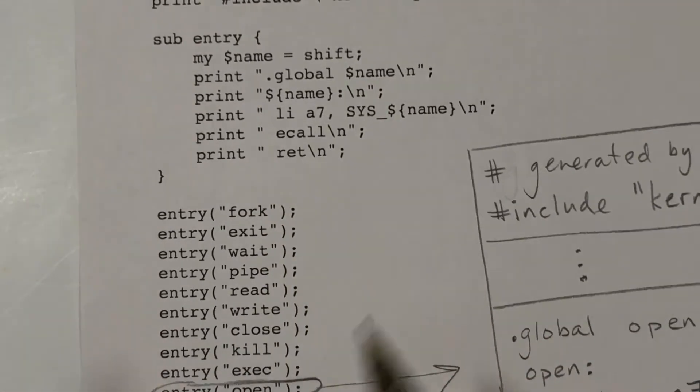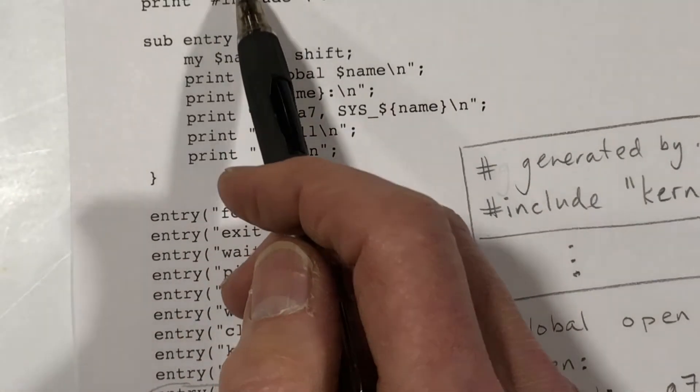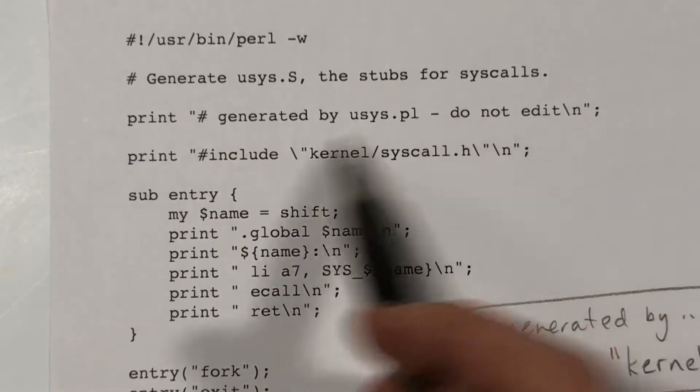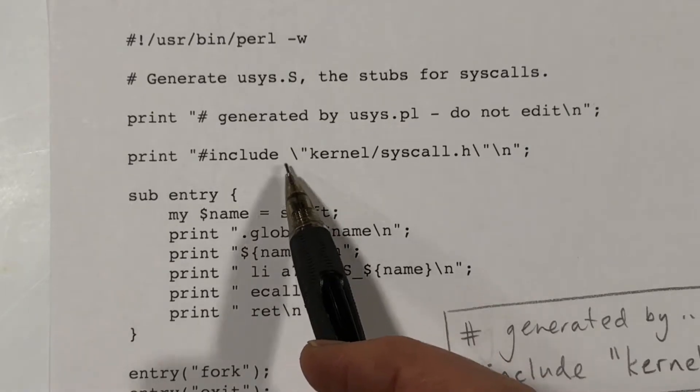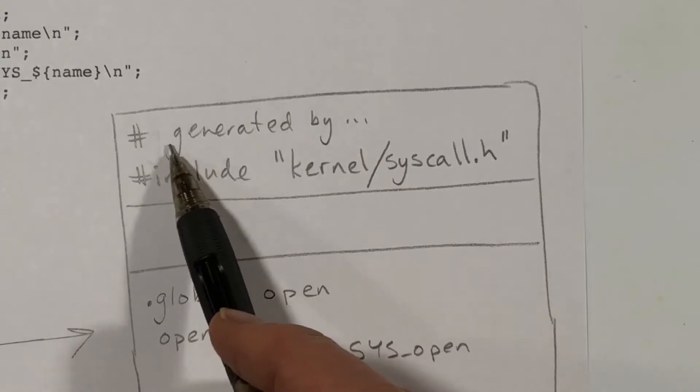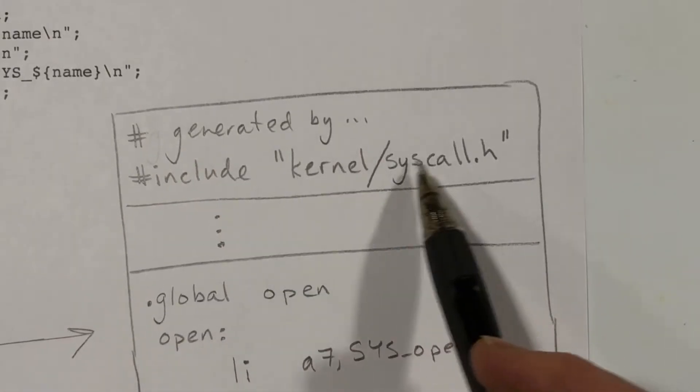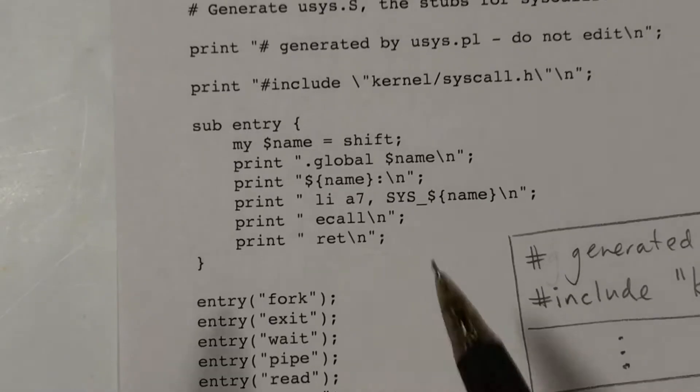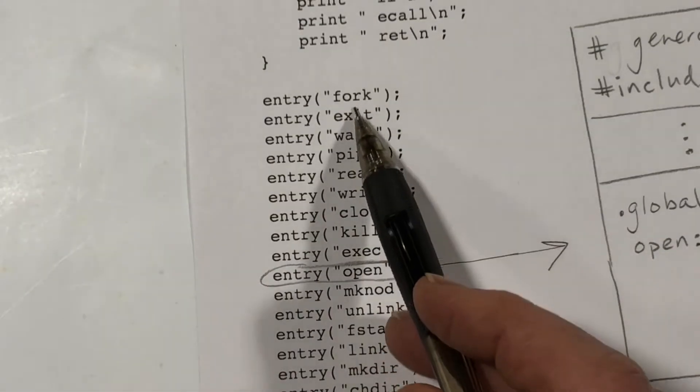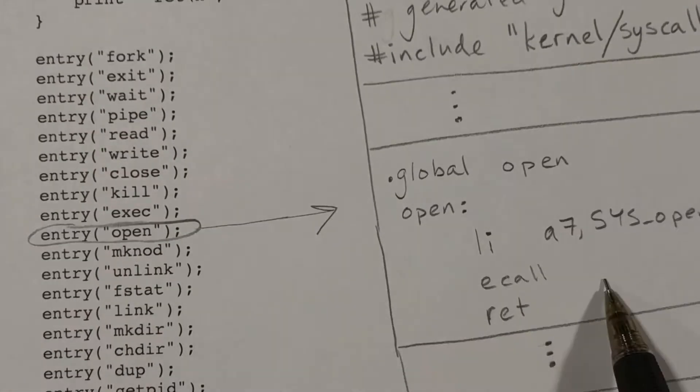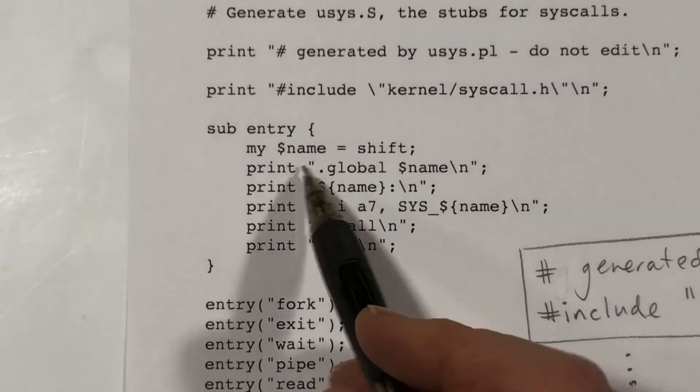So what do we see here? Well, we start with a couple print statements, a comment here, and then a pound sign include. And here I'm showing what gets produced, our comment, and the pound sign include. We're including something called syscall.h. And then for each of the 21 system calls, we are going to generate some code here. And what do we do?